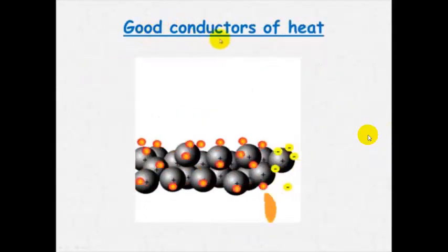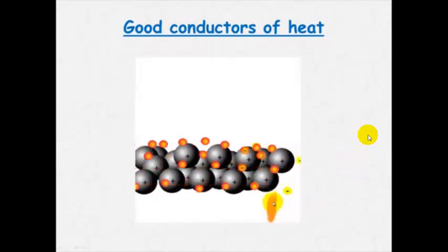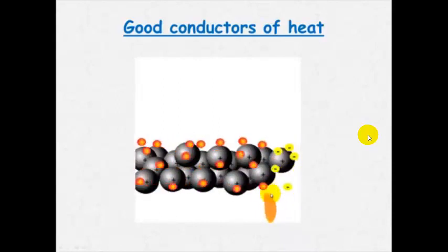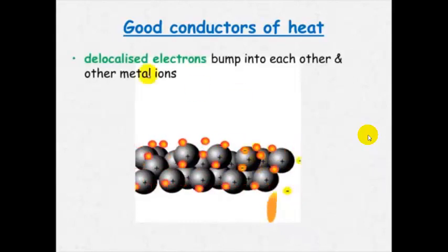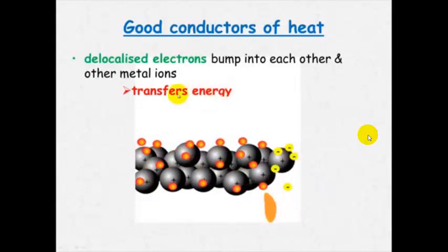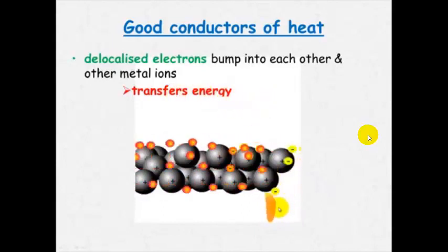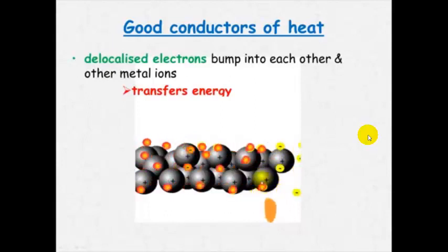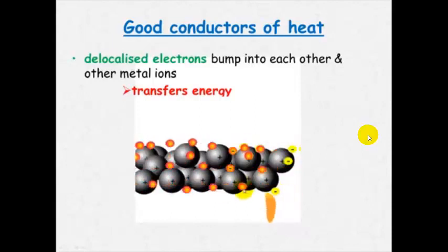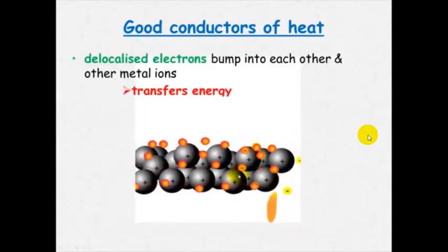They're good conductors of heat. And here what happens is if we apply some heat energy the electrons will bump into the cations and also bump into the other electrons and can transfer that energy across. So the delocalized electrons are able to carry that energy and bump into other metal ions. And this just transfers the energy. Because remember that heat is just energy. So you'll see here if one of these gets energy it will move faster and it will move then on to giving some of that energy to the next cation or to the next electron and make that one move faster.